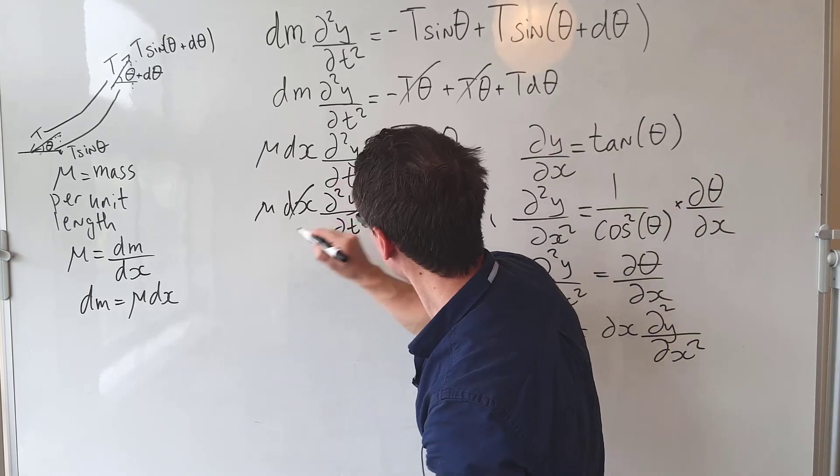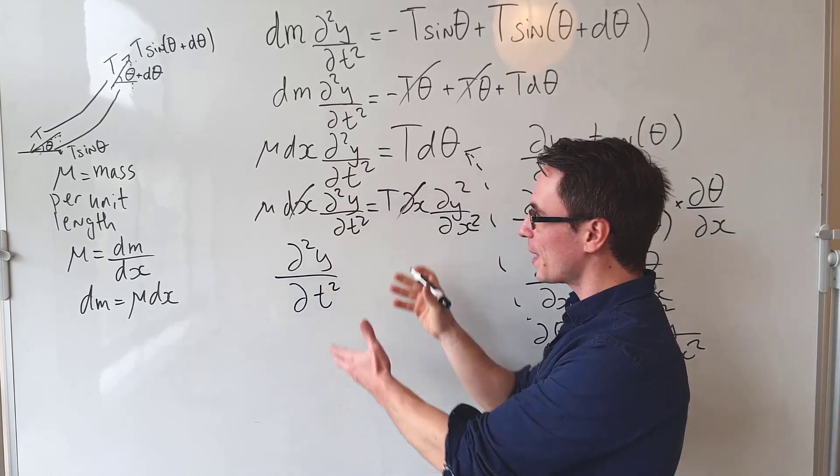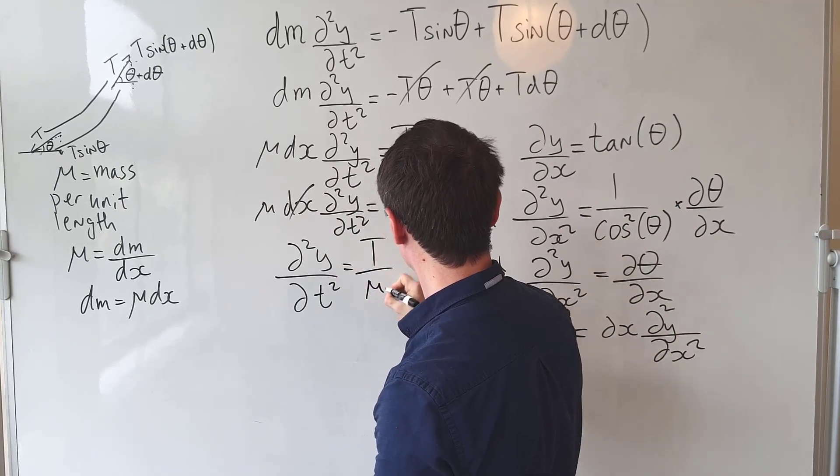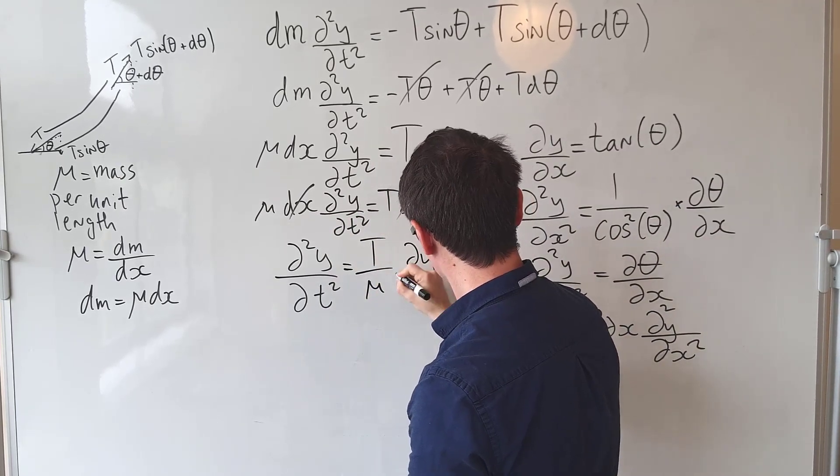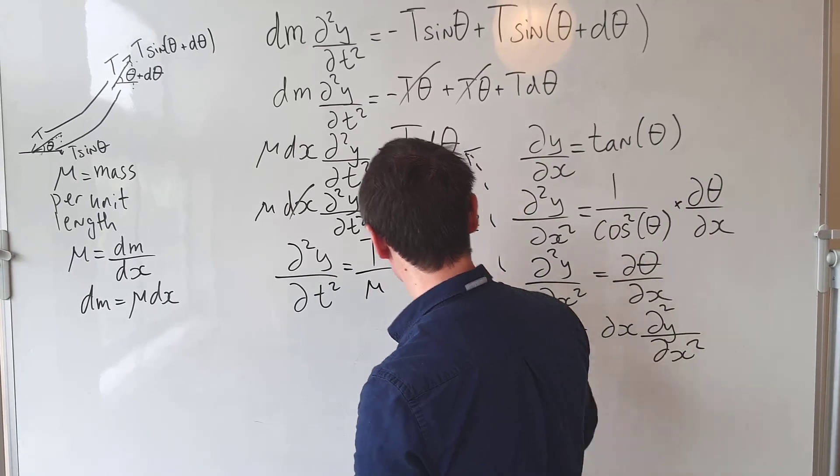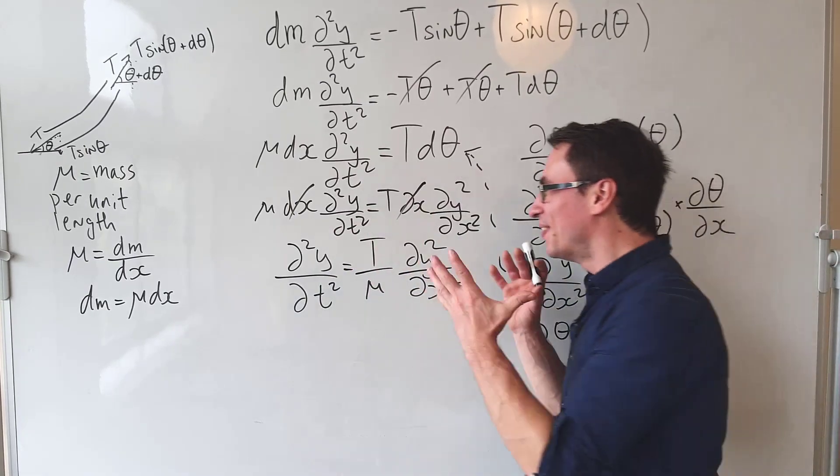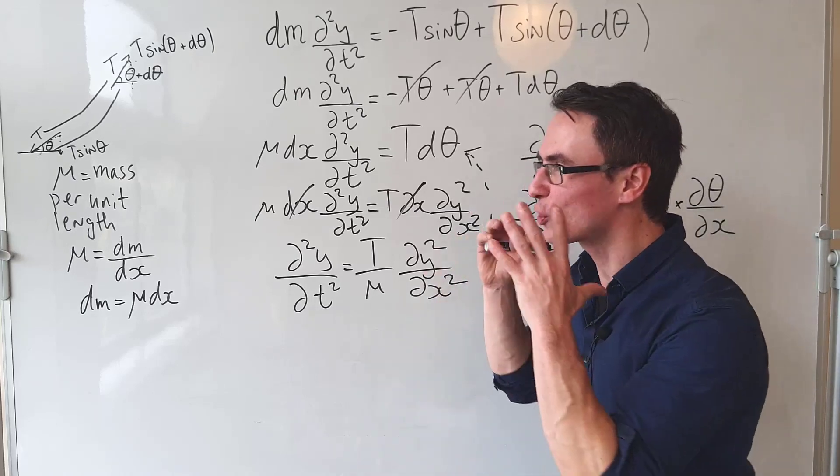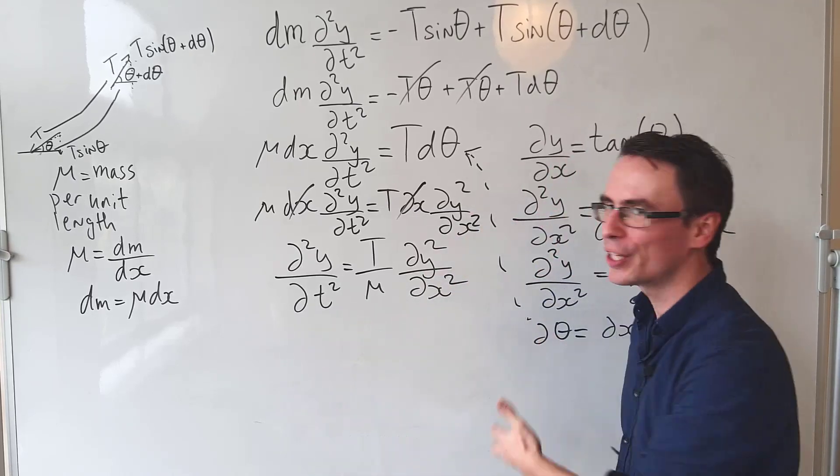Those two dx terms can now just cancel, and what we're left with is that the second time derivative equals T/mu multiplied by d²y/dx². This right here is the famous wave equation which describes the motion of a wave.